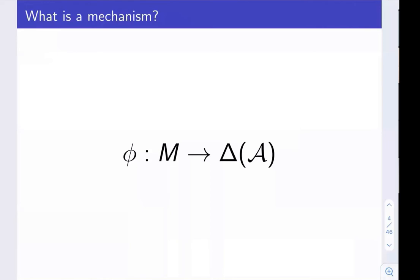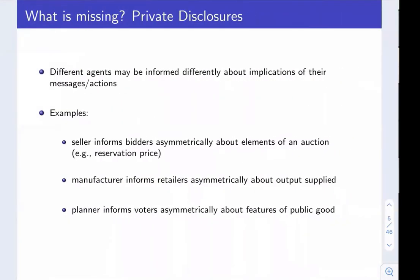A mechanism is a procedure to determine a sample of relevant allocations — an element of a set, calligraphic A. The way this element is selected is by letting agents take actions, which we typically interpret as messages, and then specifying a rule phi that responds to the messages with possibly a distribution over the relevant allocations. This way of describing a mechanism is completely general when you have a single designer — nothing relevant is missed. But when you have competing designers, there's something important which is missed: what we call private disclosure.